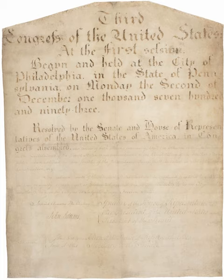However, Justice David Souter, writing for a four-justice dissent in Alden, said the states surrendered their sovereign immunity when they ratified the Constitution. He read the amendment's text as reflecting a narrow form of sovereign immunity that limited only the diversity jurisdiction of the federal courts. He concluded that neither the Eleventh Amendment in particular nor the Constitution in general insulates the states from suits by individuals. Eleventh Amendment immunity also protects states from lawsuits by foreign states in federal courts.